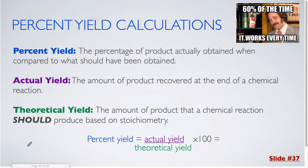The actual yield is the amount of product recovered at the end of a chemical reaction. This is something you will either be told is actually produced within a word problem, or if you were to do a lab, it's how much your lab group would actually obtain at the end. The theoretical yield is the amount of product that a chemical reaction should produce based on stoichiometry, so you would often not be given this amount within a word problem and would have to use stoichiometry to determine it.